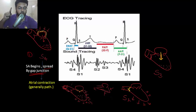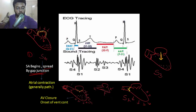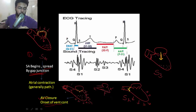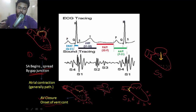After atrial contraction, ventricular contraction begins. There is closure of the mitral valve on the left heart, which produces the first heart sound, marking the onset of ventricular contraction. This is due to closure of the mitral or tricuspid valve on the right heart.